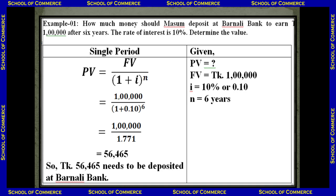Now we put the values into the formula: PV equals FV divided by (1 + i) to the power of n — that is one lakh divided by (1 + 0.10) to the power of 6. First, 1.10 to the power of 6 equals 1.771. Then one lakh divided by 1.771 gives taka 56,465. Therefore, taka 56,465 needs to be deposited at Banali Bank for Masum to have one lakh after six years.